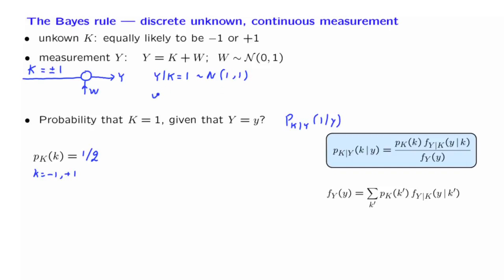On the other hand, if K happens to be equal to minus 1, then the observation that we see is going to be a standard normal plus a value of minus 1. And that changes the mean to become minus 1, but with a variance of 1.